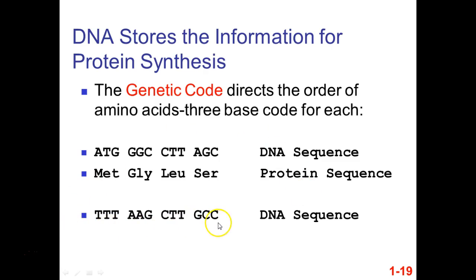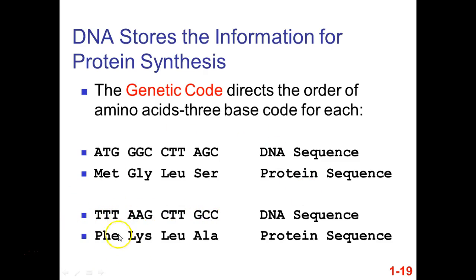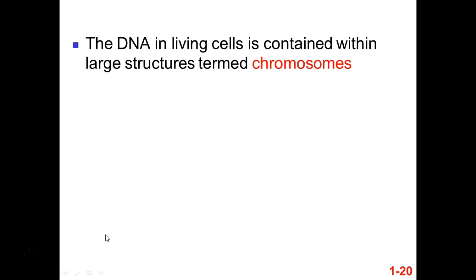Here's another example — each one of these groups of three codes for a particular amino acid. Our DNA is contained within large structures called chromosomes.